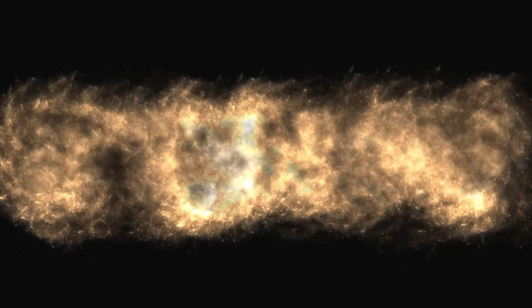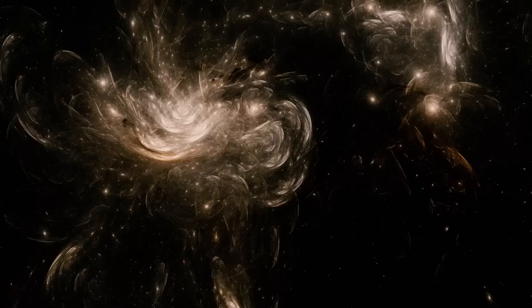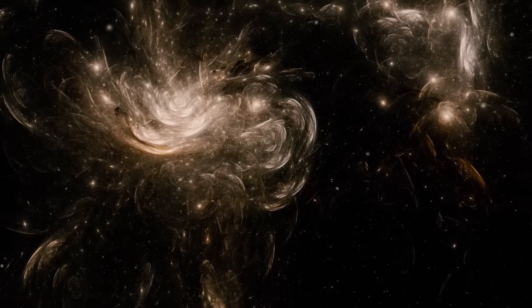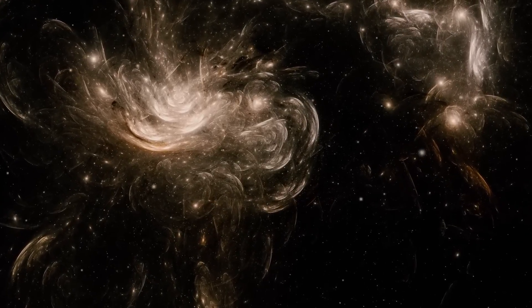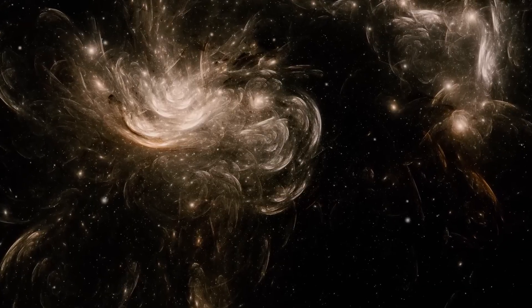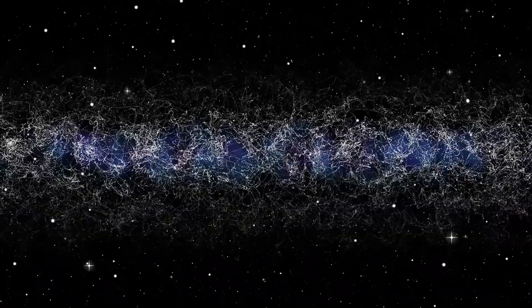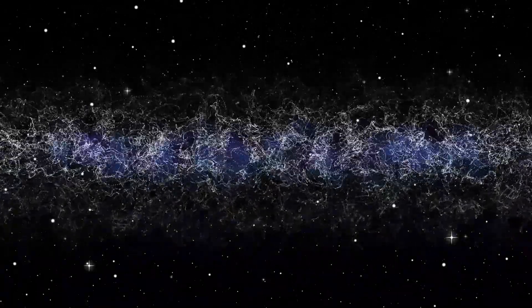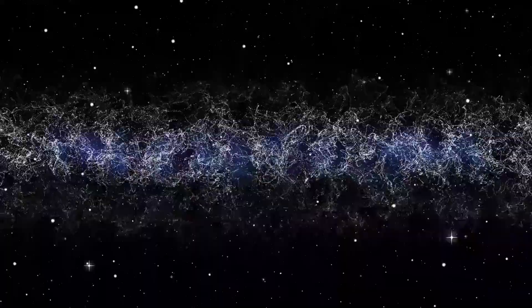To visualize this, imagine if our solar system were reduced to the size of a coin placed on a map of the United States. The entire Milky Way would then span the size of the actual continent. In that vast region, there would be around 300 billion star systems, and we are just one of them, adrift in a sea of unimaginable scale.